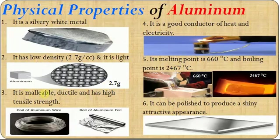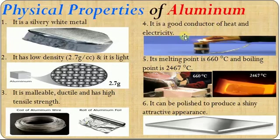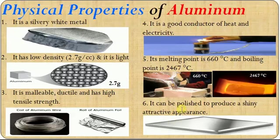Aluminium is malleable — we can draw it into sheets. It is ductile — we can draw it into wires — and it has a high tensile strength, meaning we can hold much weight. It is also a good conductor of electricity. It has a melting point of 660 degrees centigrade and a boiling point of 2,467 degrees centigrade. It can be polished to produce a shiny, attractive surface.